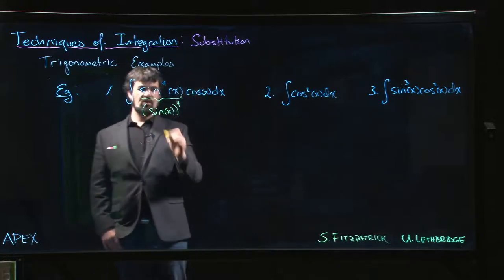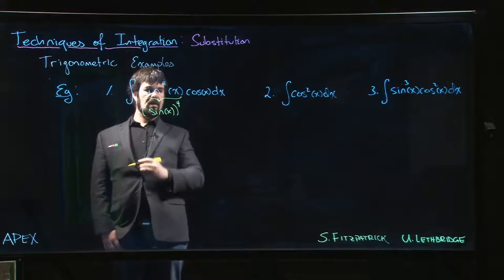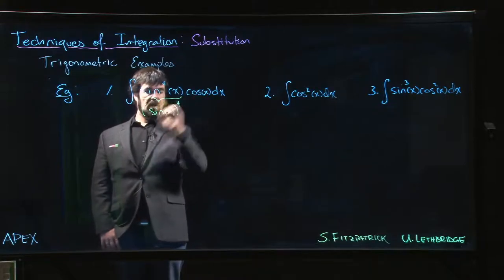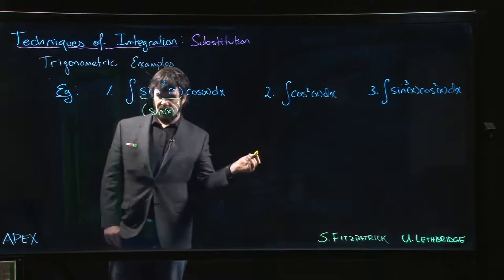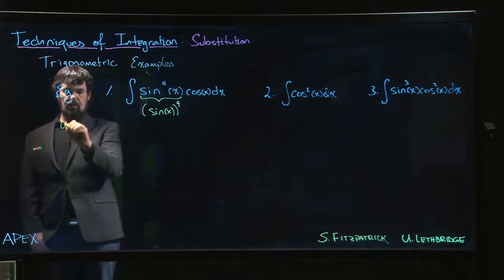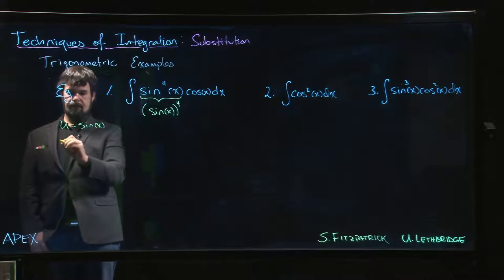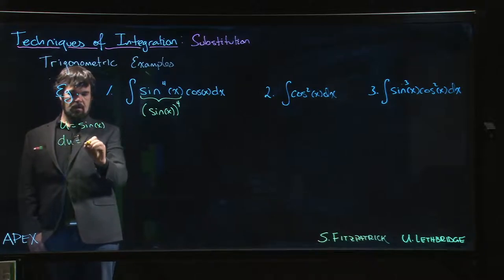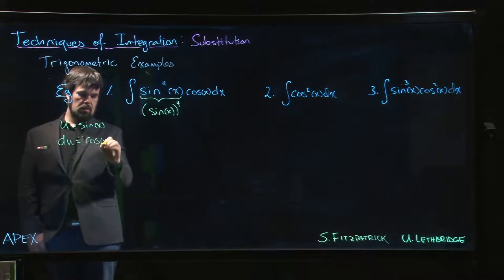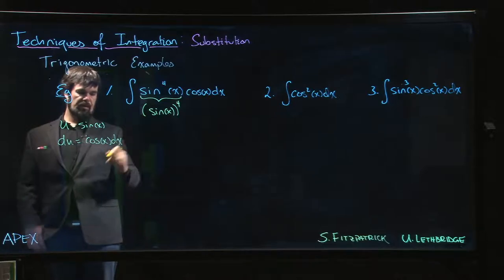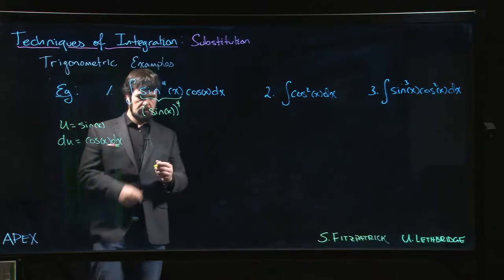So you have a very obvious composition here. We have the sine function plugged into this power function. We have the derivative of sine sitting there, so this is kind of like a poster child for substitution. So we do the obvious thing: we let u equal sine x, du will be cos x times dx, and we can plug all that in.